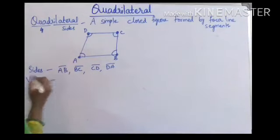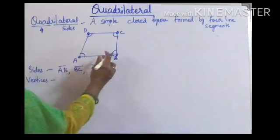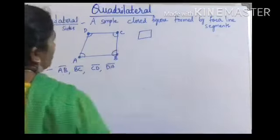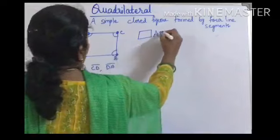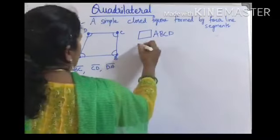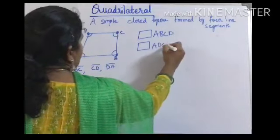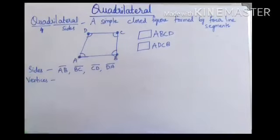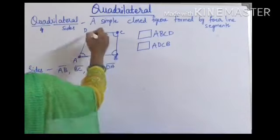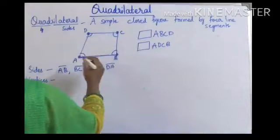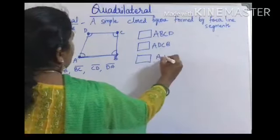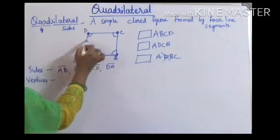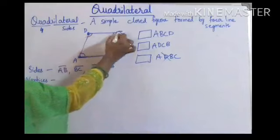Now before vertices, how do you read this quadrilateral, children? You can write it in so many ways. We can represent it as quadrilateral ABCD. You can also go A, D, C, B. But you cannot write A, C, B, D — the continuation should be there. You should not skip vertices because that breaks the chain. So the order must follow the sides continuously.